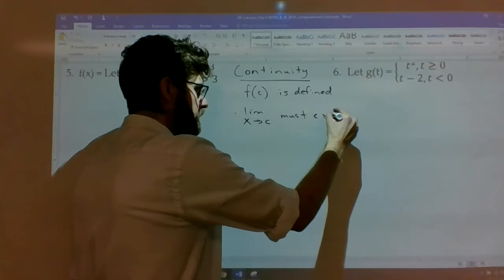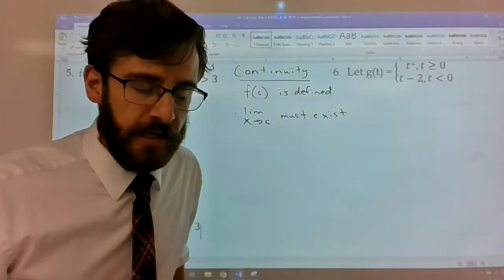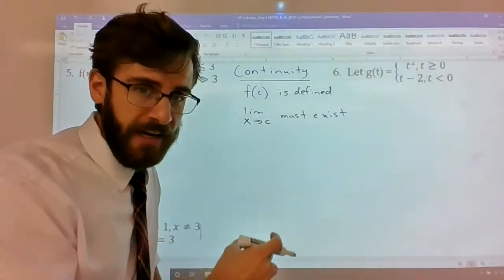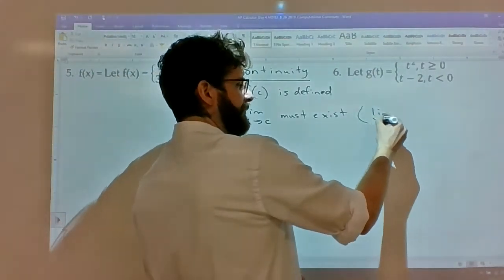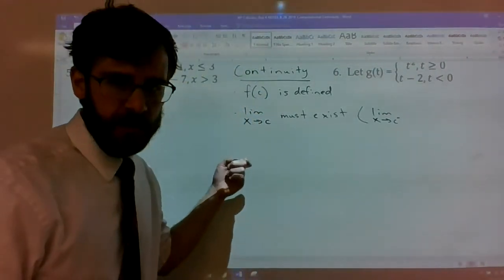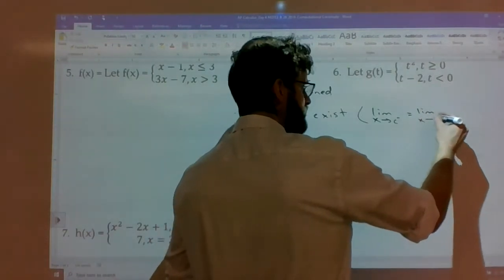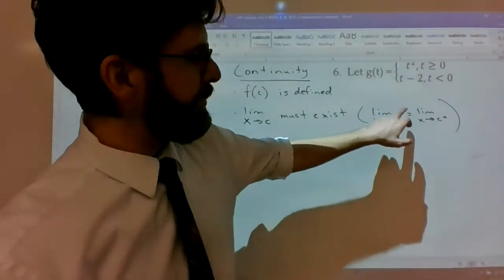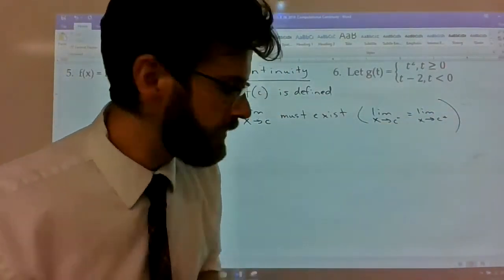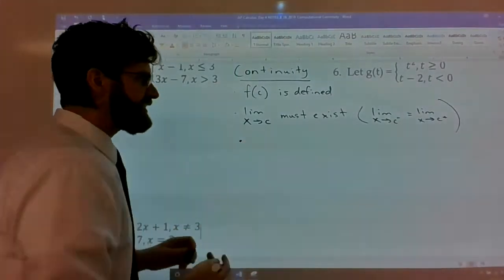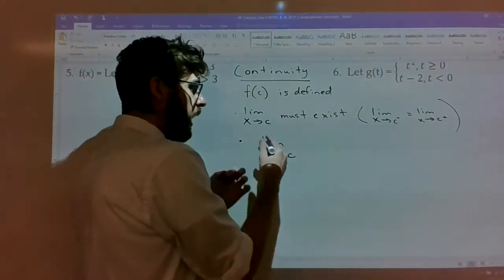We have to think of 'the limit exists' as a kind of code meaning: the left-hand limit equals the right-hand limit. So: the limit as x approaches c from the left of f(x) must equal the limit as x approaches c from the right of f(x).